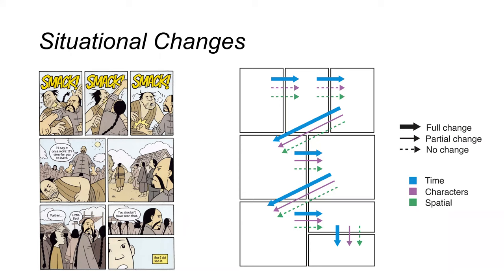The mentioned changes in time, characters, or space might be full changes or partial changes, or there might be no change at all. For instance, the scene might change completely, or there might be changes in some aspects. In the first three panels, the time progresses, but both the characters and the space remain constant. Whereas from panel three to four, there is a partial character change because new people are added to the scene.